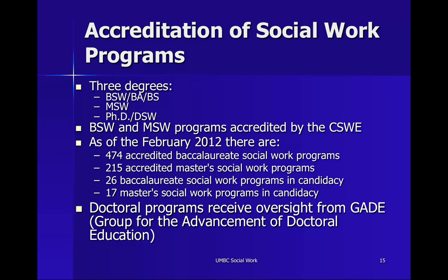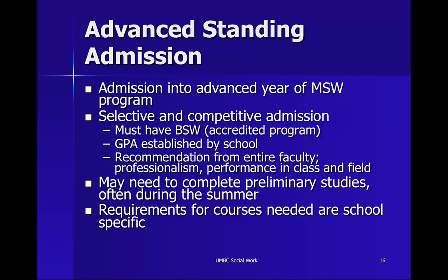UMBC is an accredited social work program — one of 474 — and actually one of the larger social work programs in the country. If you're thinking about pursuing a graduate degree, you definitely want to look at accredited programs. Many students want to move on to what we call advanced standing. Admission to advanced standing is through a selective and competitive process. Students must have a BSW from an accredited program, meet the required GPA, have a faculty recommendation, and may need to complete additional coursework.